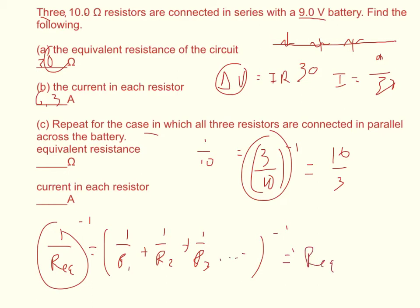Since the resistances were all 10, 1 over 10 plus 1 over 10 plus 1 over 10 equals 3 over 10. Take the inverse of that, you get 10 over 3, which is roughly equal to 3 and 1 third or 3.333 ohms.